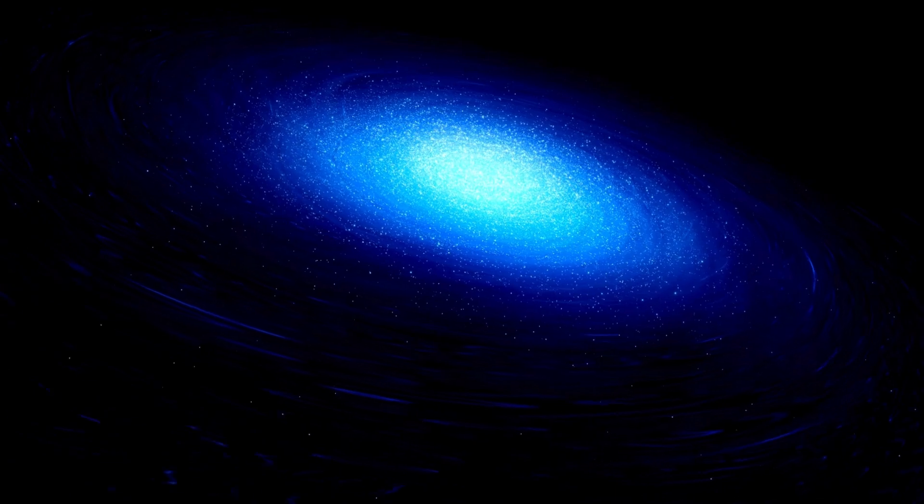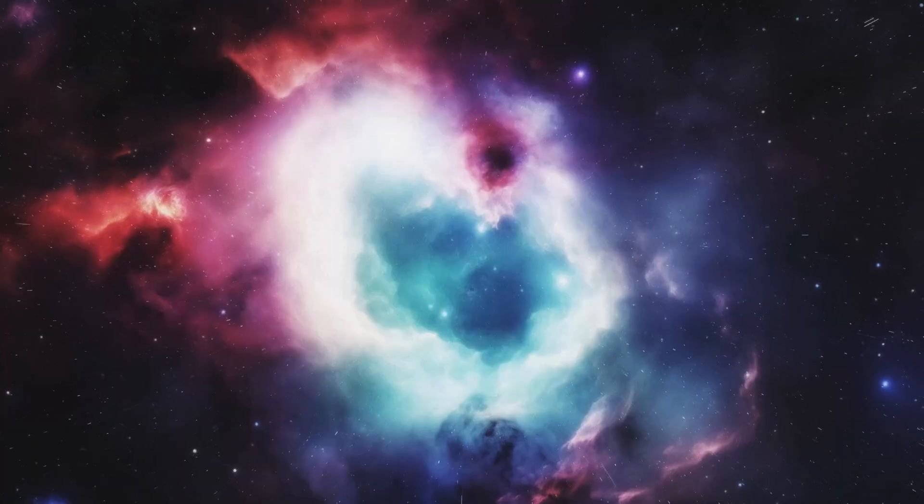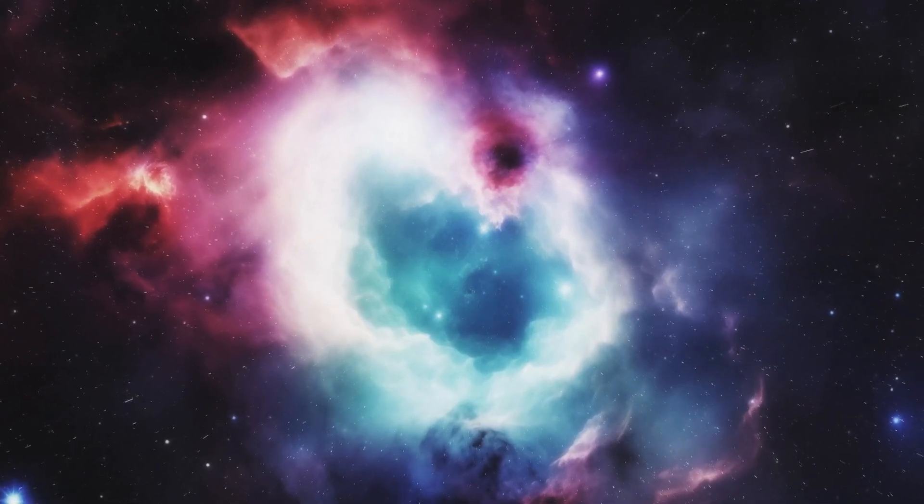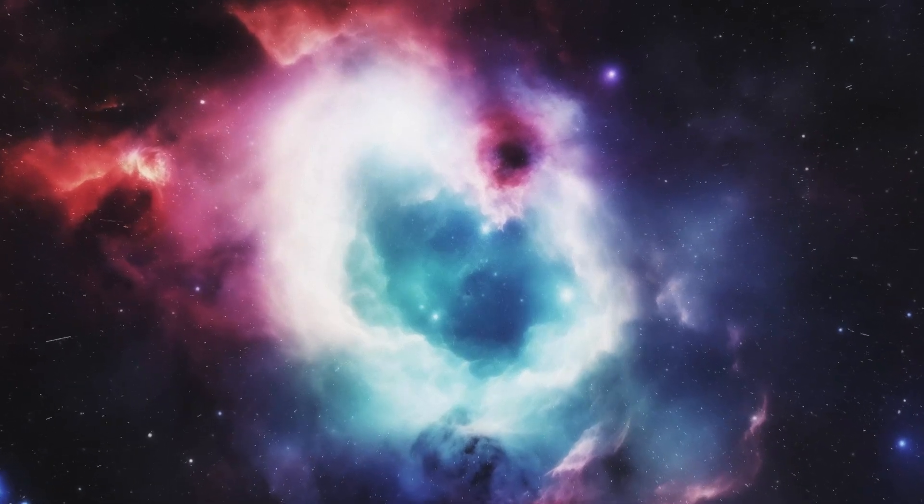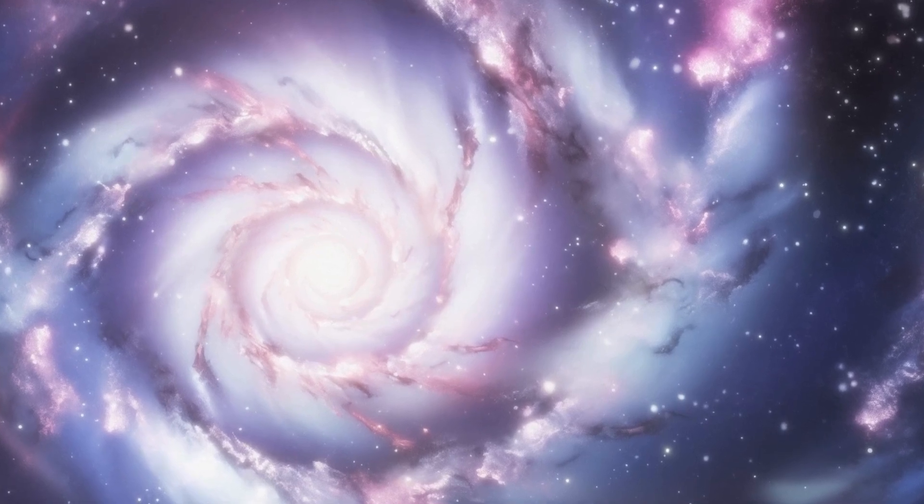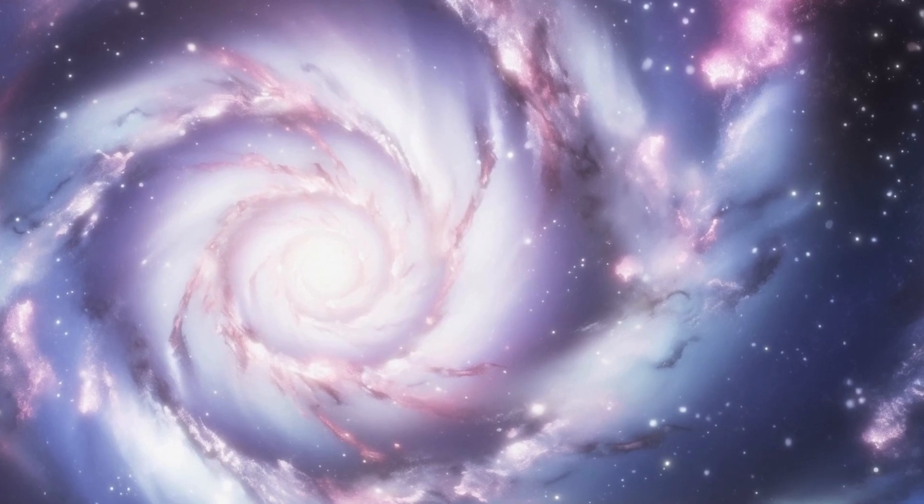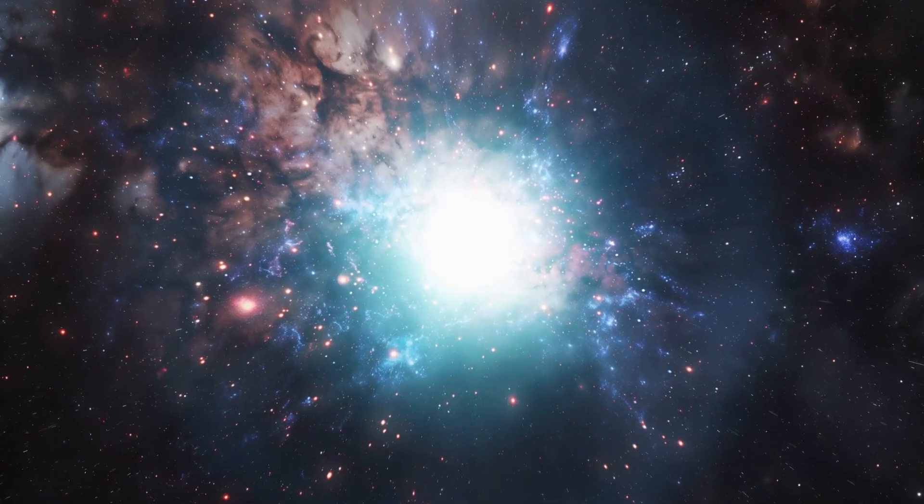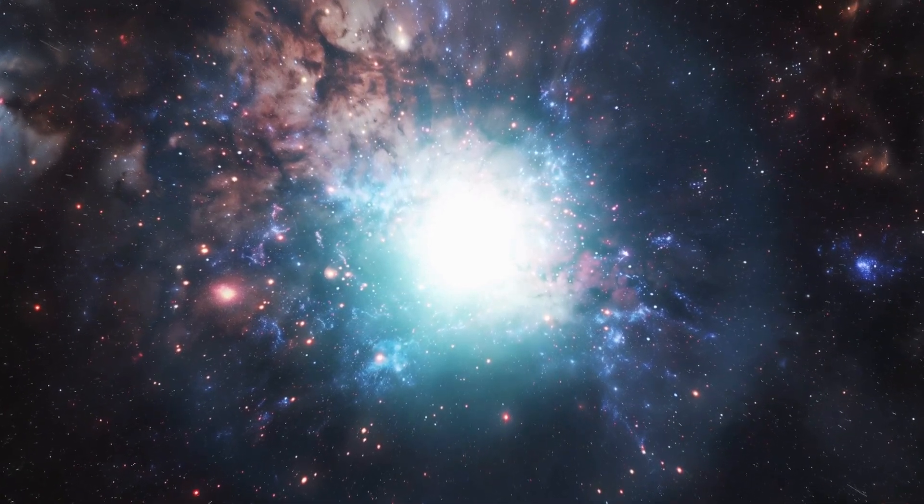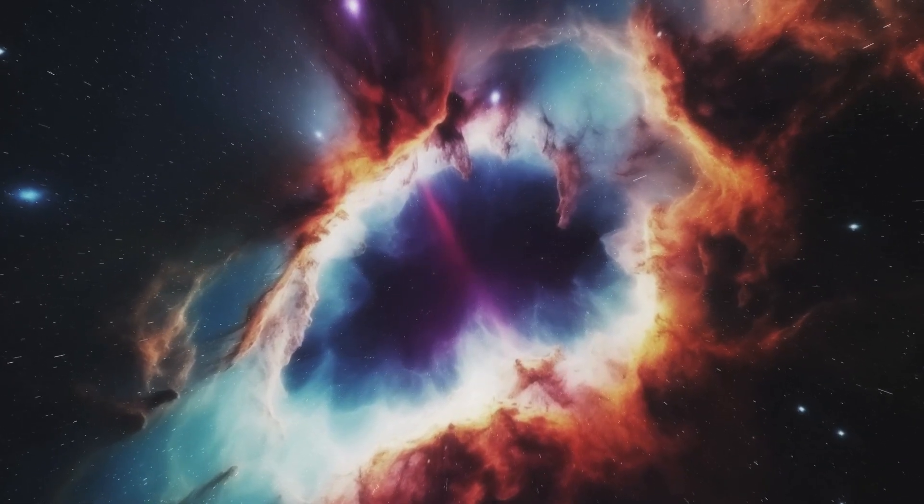Betelgeuse, a colossal red supergiant star and one of the closest stars to Earth, has recently gone through a striking dimming that has captured attention worldwide. This dimming has led to speculation among astronomers about its potential repercussions. Some researchers believe the unusual behavior could be a harbinger of a supernova blast, a catastrophic event that happens when a star exhausts its nuclear fuel and collapses under its own weight, leading to a massive explosion.